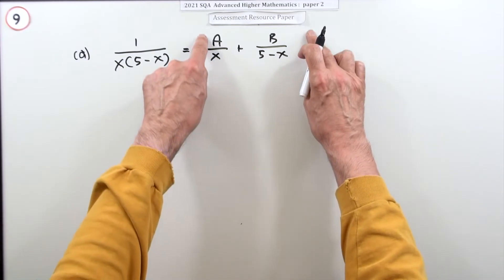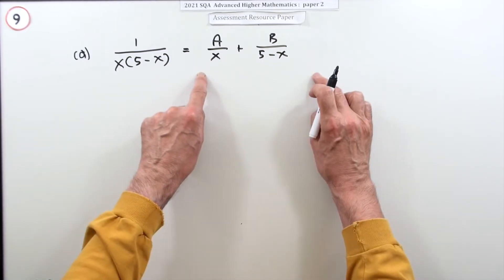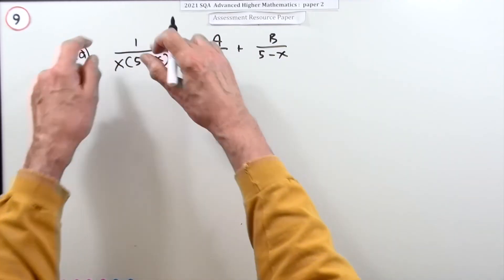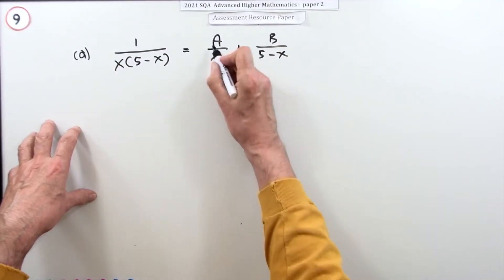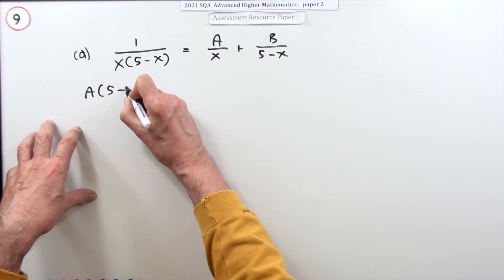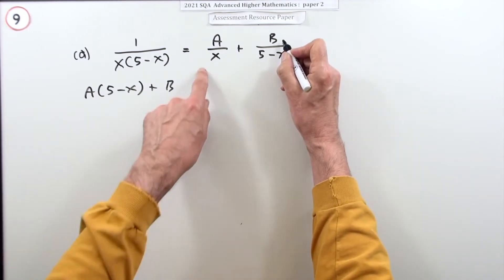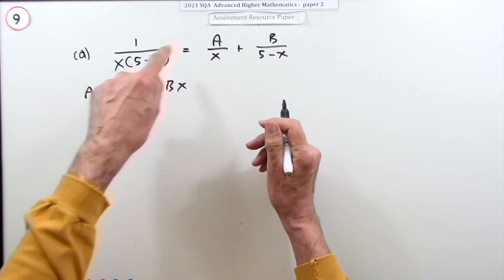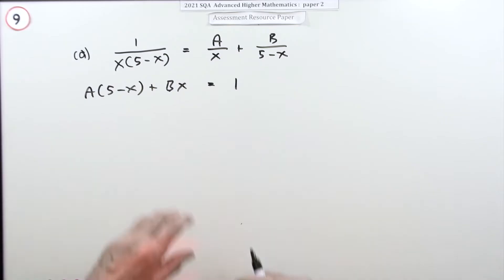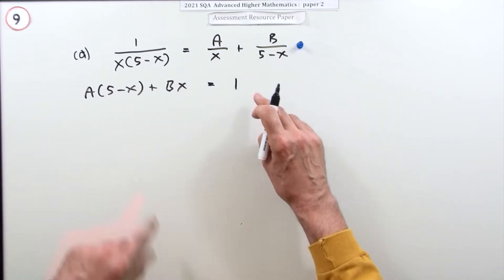If that's the case and you were to add this into a single fraction to compare it to this fraction, the numerator of that should equal the numerator of that. The numerator of that would be a multiplied by the 5 minus x. The numerator of that would be the b times the x. Sometimes you just take that across and multiply, so that should equal one.